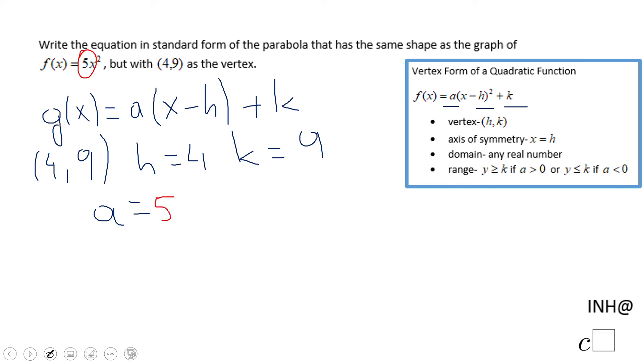It's going to have the same shape, just moved based on what I said: 4 right, 9 up. So the final equation for our problem will be g(x) = 5(x - 4)² + 9. And that's it.